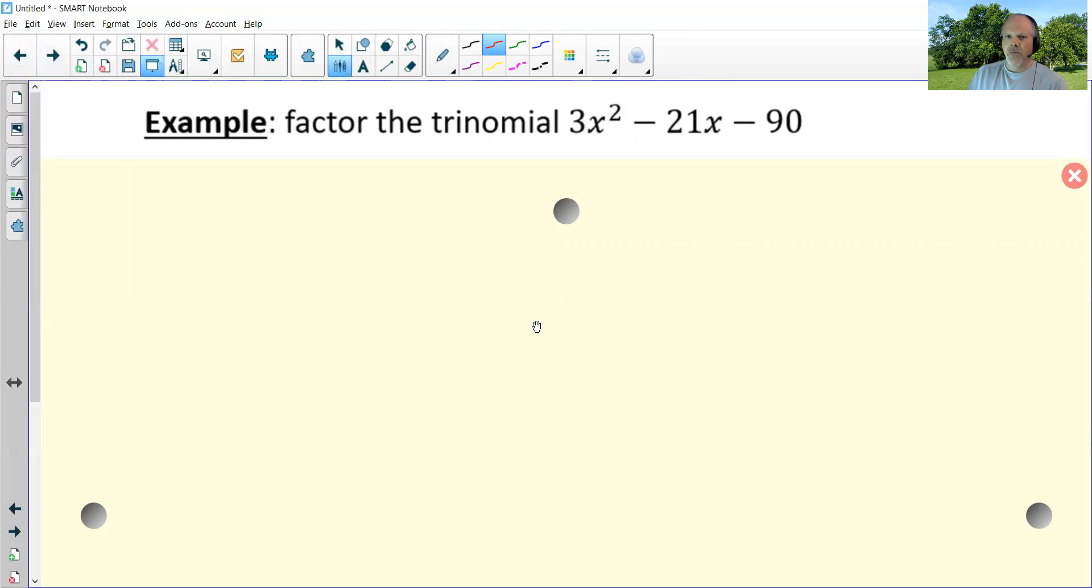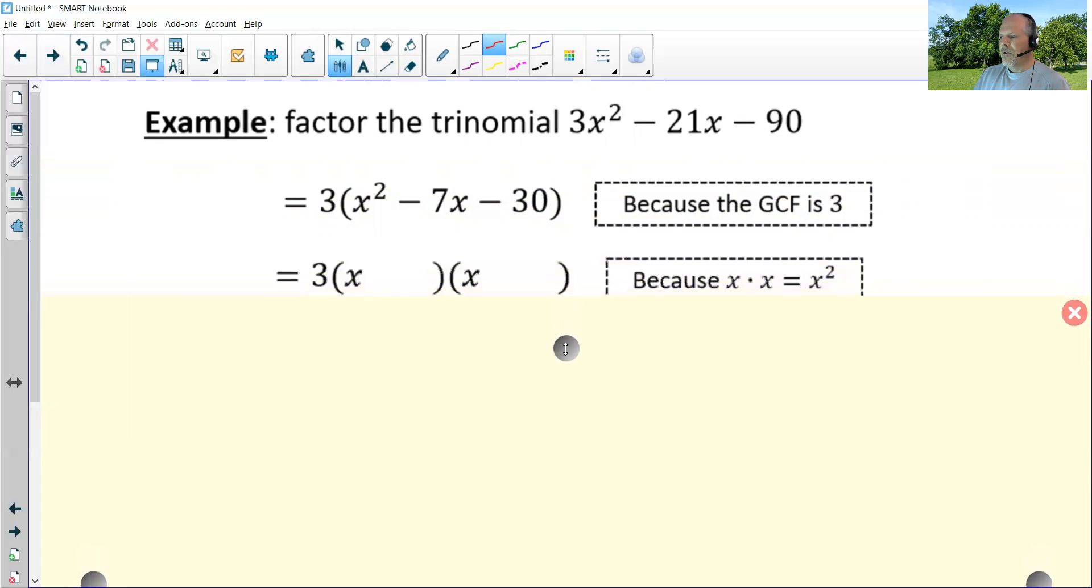One more example. The GCF on this one is three. All three terms are divisible by three. So I can extract a three and I'm left with three times the quantity x squared minus seven x minus 30. I'll draw my binomials with x times x giving me x squared. But now I need a list of factors for 30.